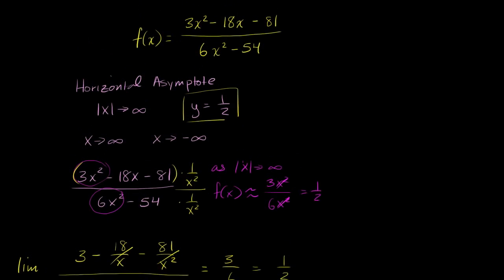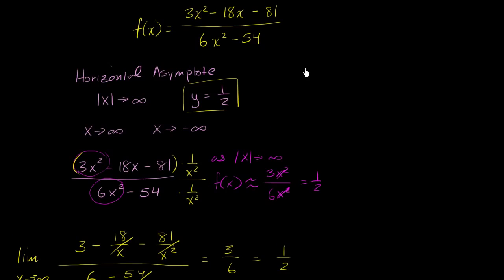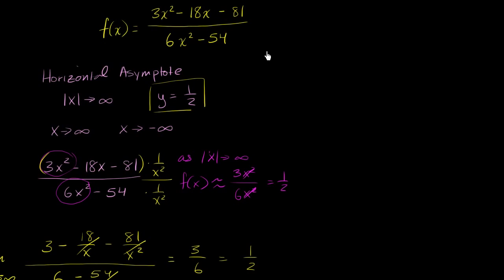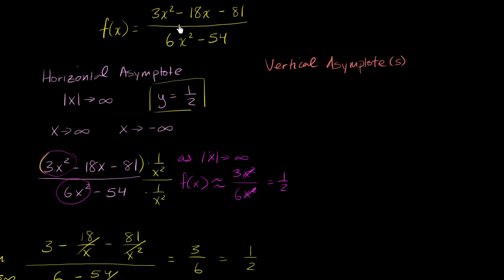Now let's think about the vertical asymptotes — possibly more than one. It might be tempting to say you get a vertical asymptote whenever the denominator equals 0, which makes the rational expression undefined. But as we'll see, that is not exactly right. Just making the denominator equal 0 by itself will not create a vertical asymptote; it will be a place where the function is undefined, but that alone does not make a vertical asymptote.